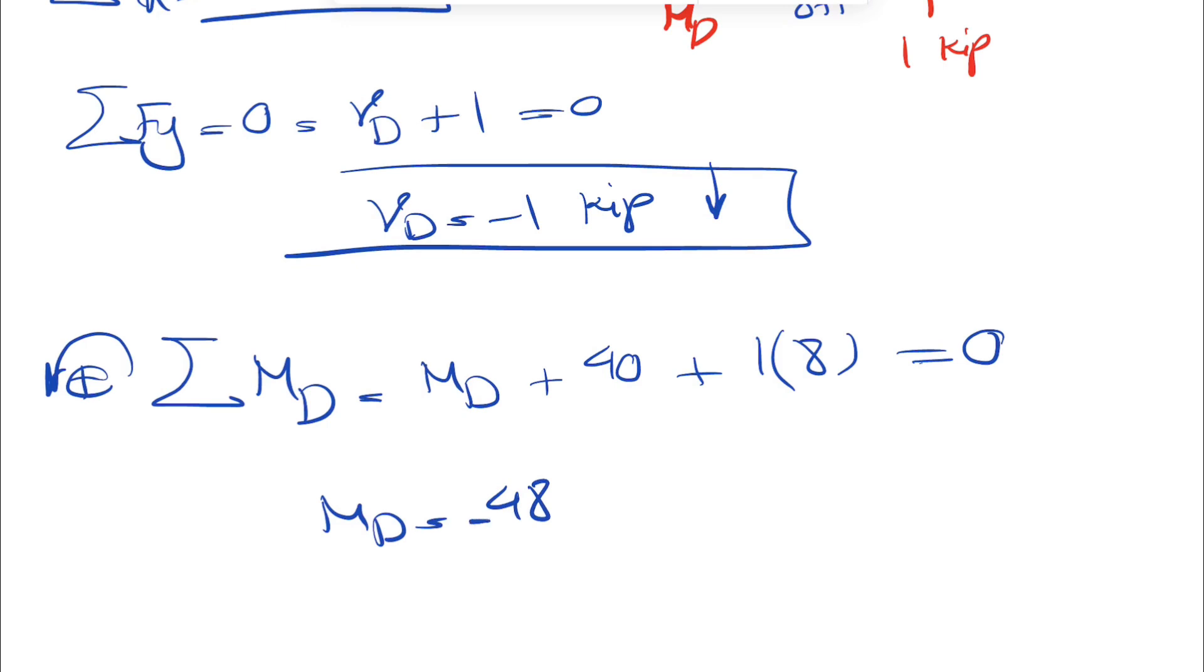Then we're going to have a negative sign, kip foot, and the negative sign shows that the moment is clockwise.